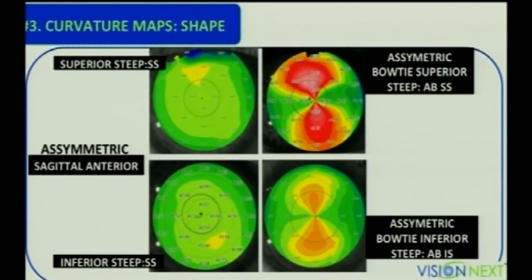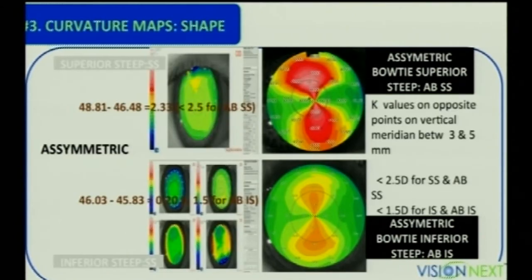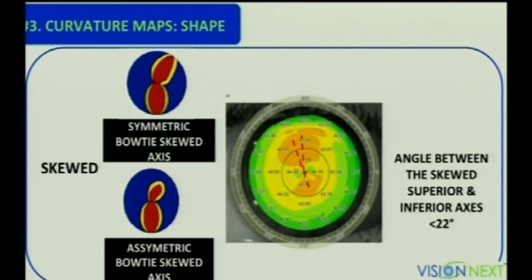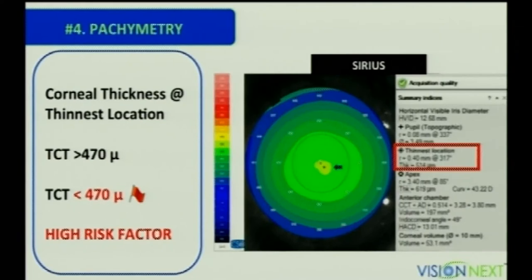The asymmetrical patterns include superior steepening, inferior steepening, or asymmetric bow tie with superior or inferior steepening. Check the K values on opposite points between 3 to 5 meridians — it should be less than 2.5 diopters for superior steepening and less than 1.5 for inferior. If there is a skewed radial axis between the asymmetric bow tie, that's usually not a good sign. With rampant use of contact lenses it may still be seen; if the axis is less than 22 degrees it may be normal. The next step is the pachymetry map — look for the thinnest point.